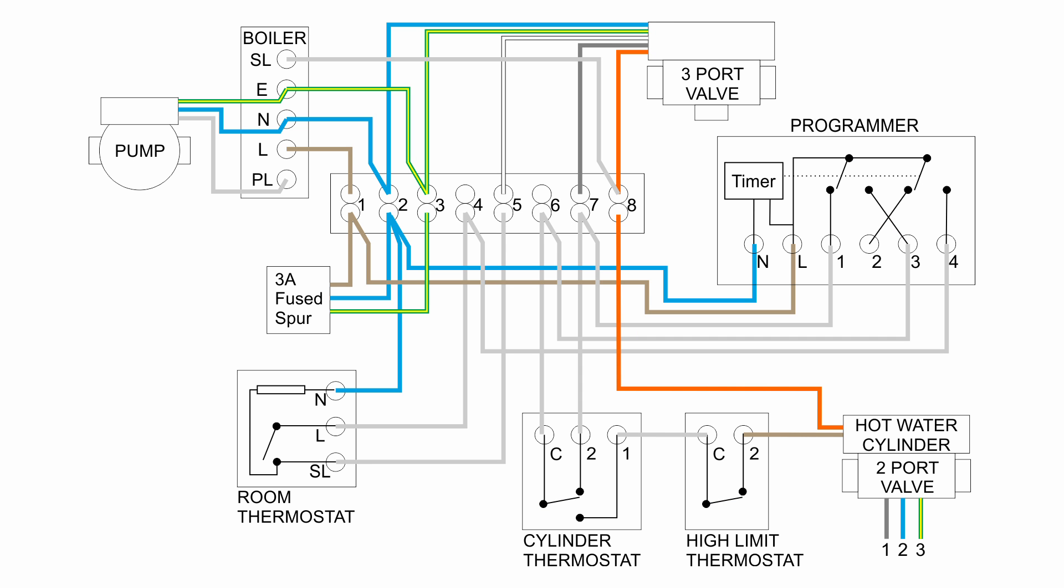Now the two items which are added with an unvented cylinder are the two-port valve which we've seen previously, so that's obviously what cuts off the water supply in the case of some kind of problem, and there's also a second thermostat which we've got shown here at the bottom as a high limit thermostat. And this is a thermostat which, when the temperature of the water reaches a certain point, this will open and cut off the supply of power to the valve.